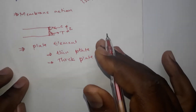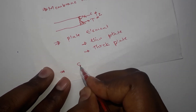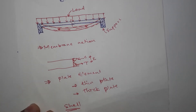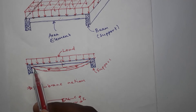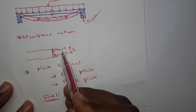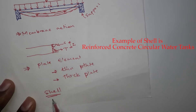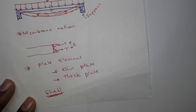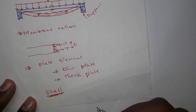So now the third part is the shell element. A shell element is used when you want to consider both axial rigidity as well as the flexural rigidity of the area element. So in this condition, the shell element will be used in modeling using different finite element packages.